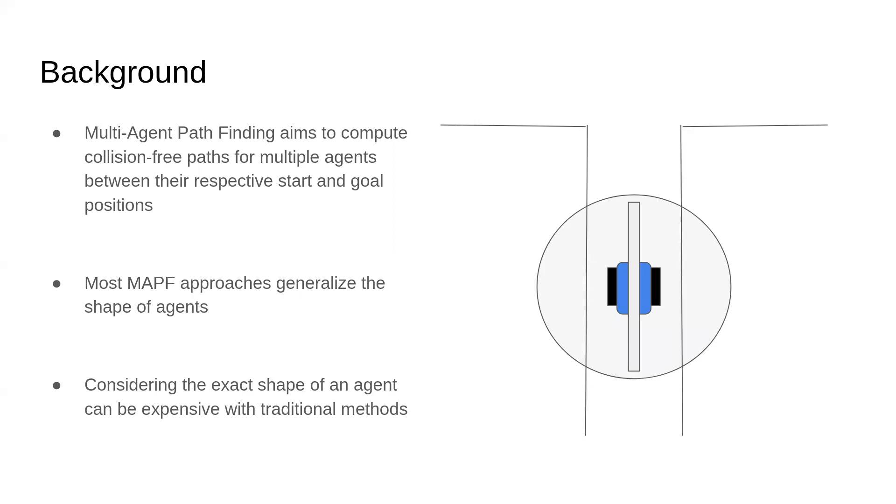In these situations the shape and orientation of these agents are important to ensure collision-free paths. Traditional approaches simplify the shape of these agents as circles or points. This is because exact methods for collision checking may slow down planning.